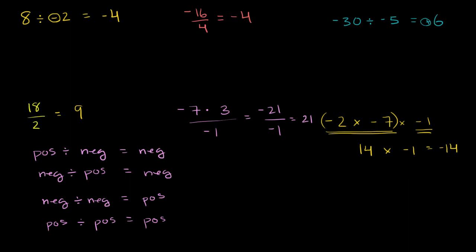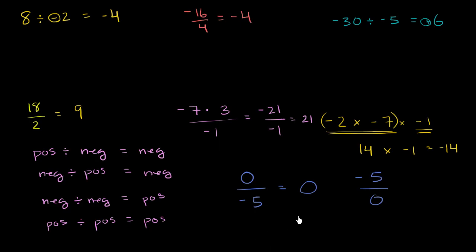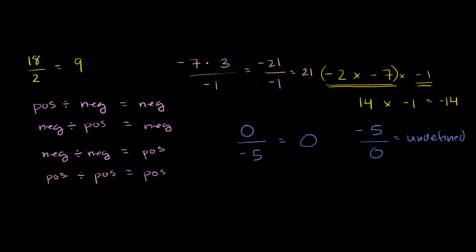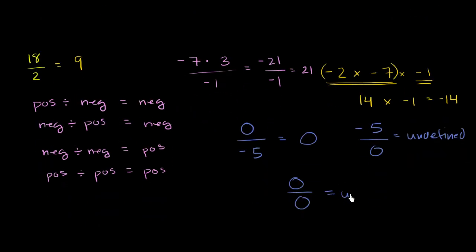Let me give you a couple more trick problems. What would happen if I had 0 divided by negative 5? Well, 0 divided by anything that's non-zero is just going to be equal to 0. What if we did it the other way — negative 5 divided by 0? We don't know what happens when you divide things by 0; we haven't defined that, so we traditionally say this is undefined. Similarly, even 0 divided by 0 is still undefined.